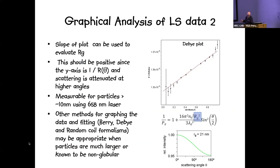The Debye plot also gives the radius of gyration from the gradient, since this is reciprocal intensity — lower intensity at higher angles reflects the angular attenuation, measurable for particles around 10 nm or larger. There are other methods of graphing the data; the Debye plot is used most commonly because most proteins are globular and fairly small relative to the wavelength of light. The Berry plot and random coil formalisms may be appropriate when particles are larger or already known to be non-globular.